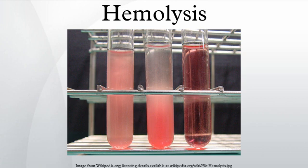Because in vivo hemolysis destroys red blood cells, in uncontrolled, chronic, or severe cases it can lead to hemolytic anemia. A hemolytic crisis, or hyper-hemolytic crisis, is characterized by an accelerated rate of red blood cell destruction leading to anemia, jaundice, and reticulocytosis. Hemolytic crises are a major concern with sickle cell disease and G6PD deficiency.